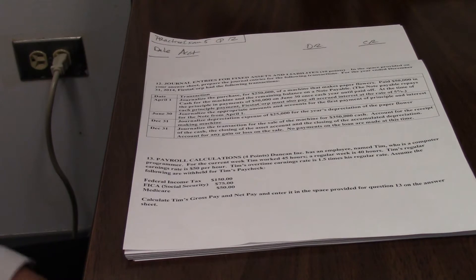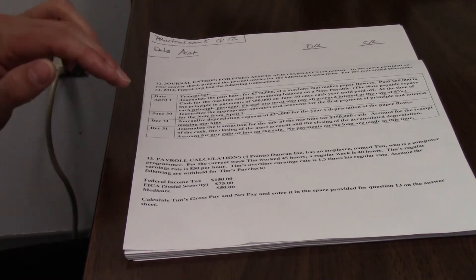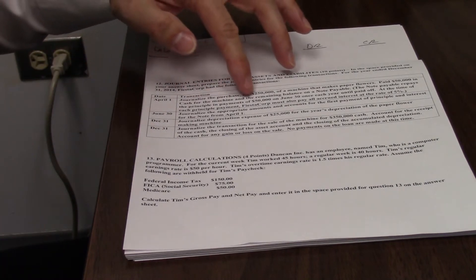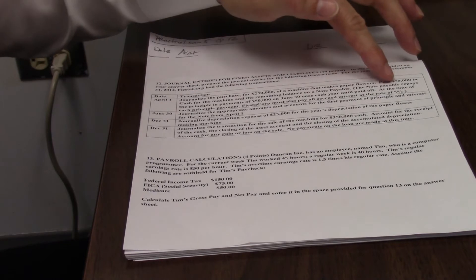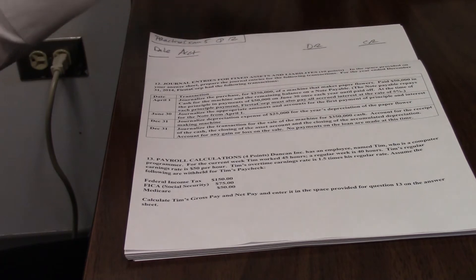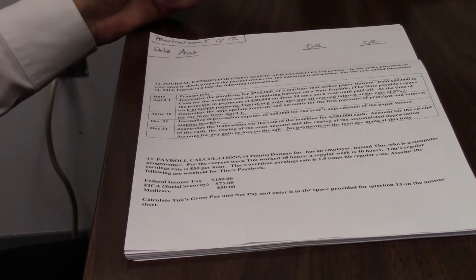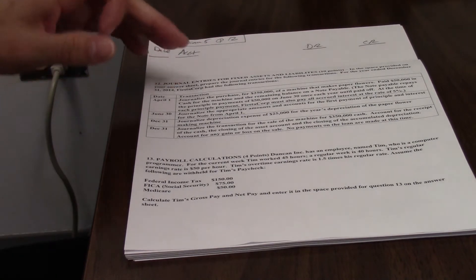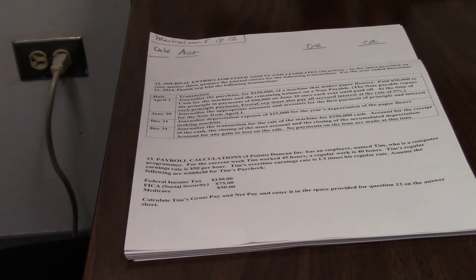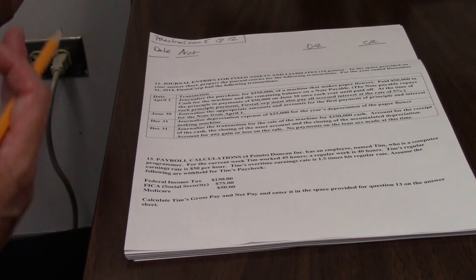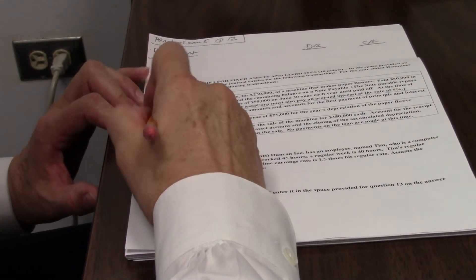In this example, a machine has been purchased and we need to put it on the books. So we're just going to read the transactions and do them. Purchase $250,000 machine and we paid $50,000 in cash. The remaining goes on a note payable. That's all we need to do this first transaction, which happens on April 1.